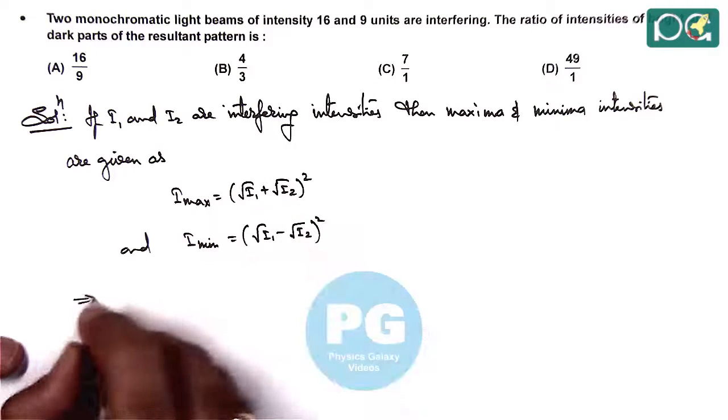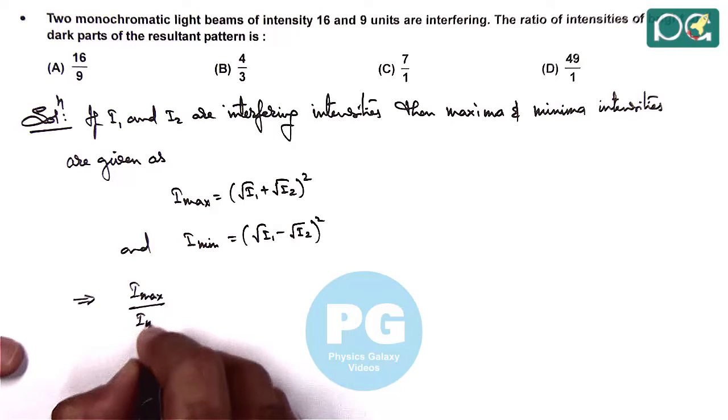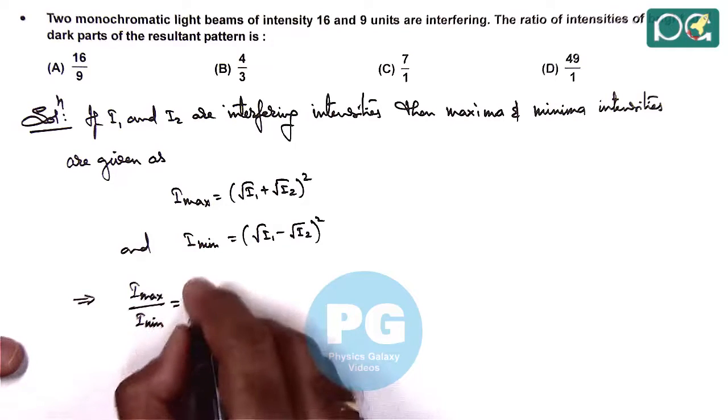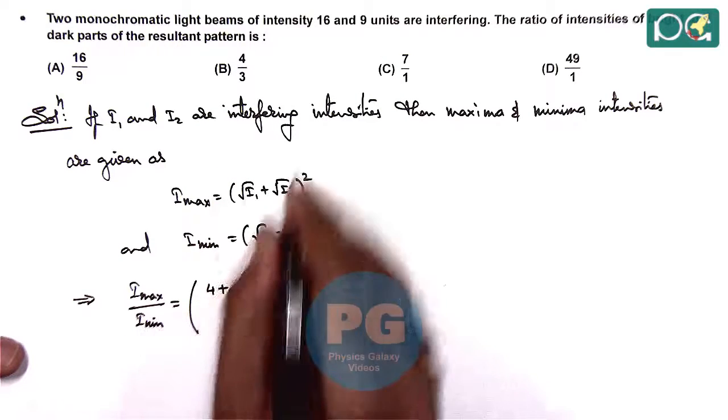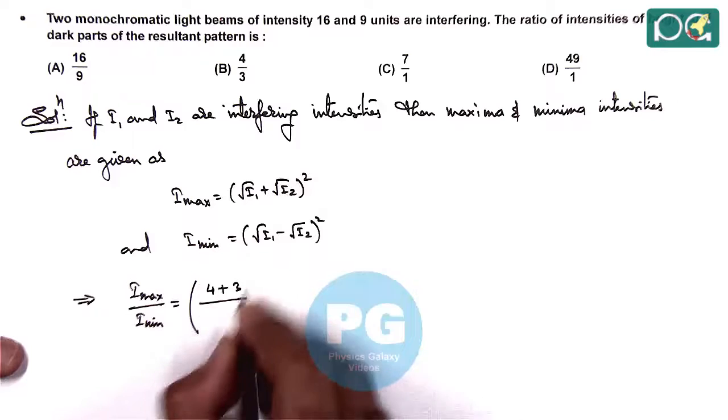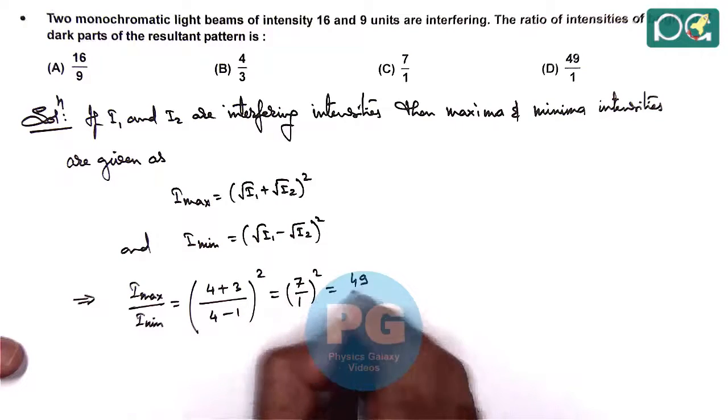From here, we get Imax/Imin equals (√I1 + √I2)² divided by (√I1 - √I2)². With √I1 = 4 and √I2 = 3, this becomes (4 + 3)² / (4 - 3)² = 7²/1² = 49/1.